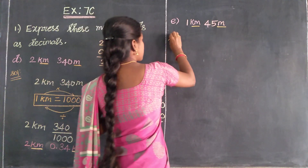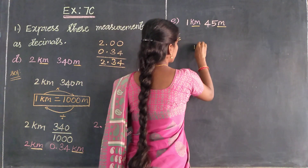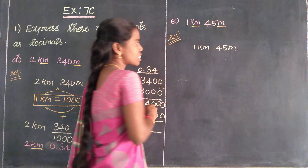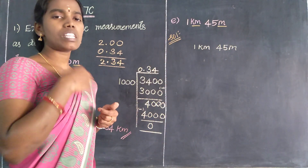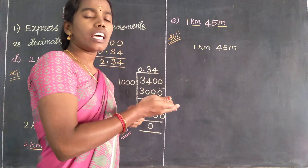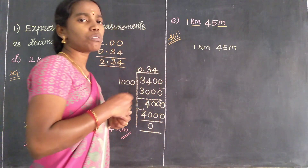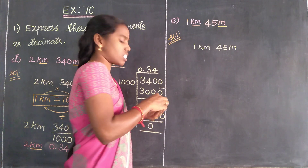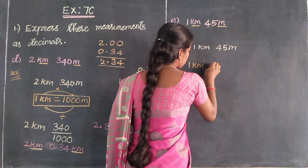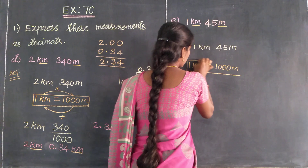Then how to change? First you change these measurements and find out the decimals. The first number is 1 kilometer and 45 meters. Kilometer is the highest measurement compared to meter. First, consider meters — meter to change into kilometer. Then: 1 kilometer is equal to 1000 meters.